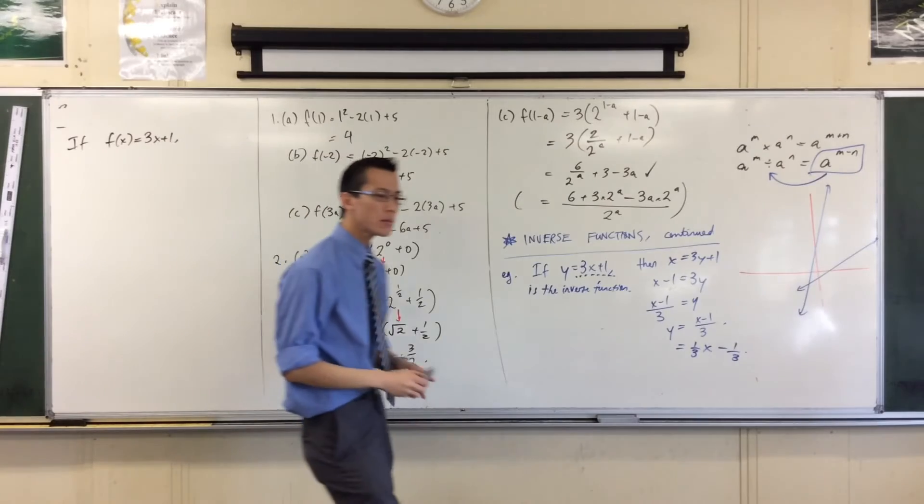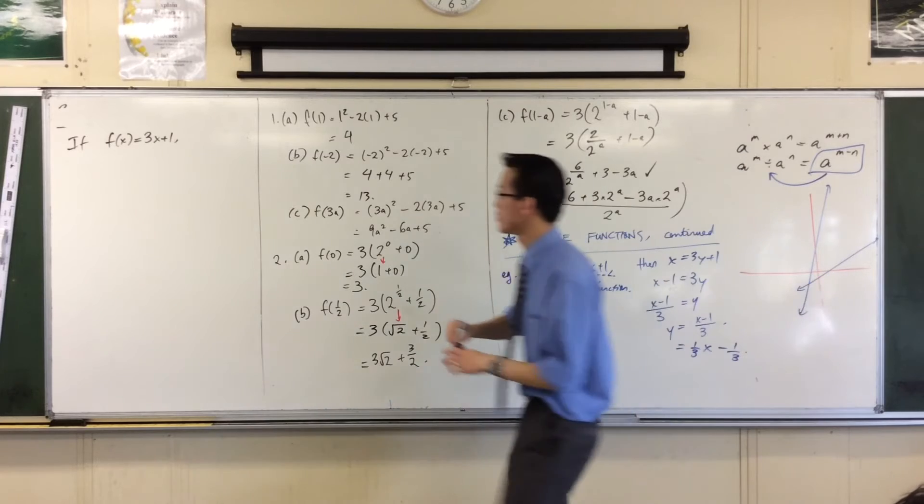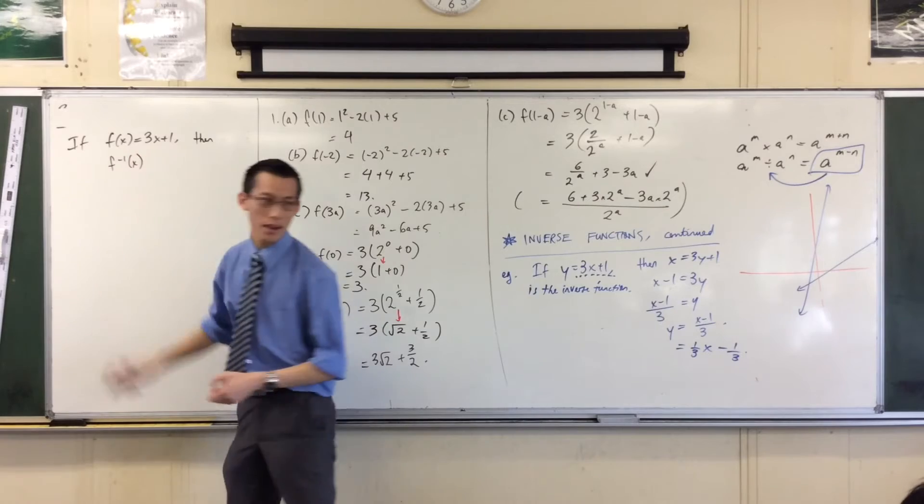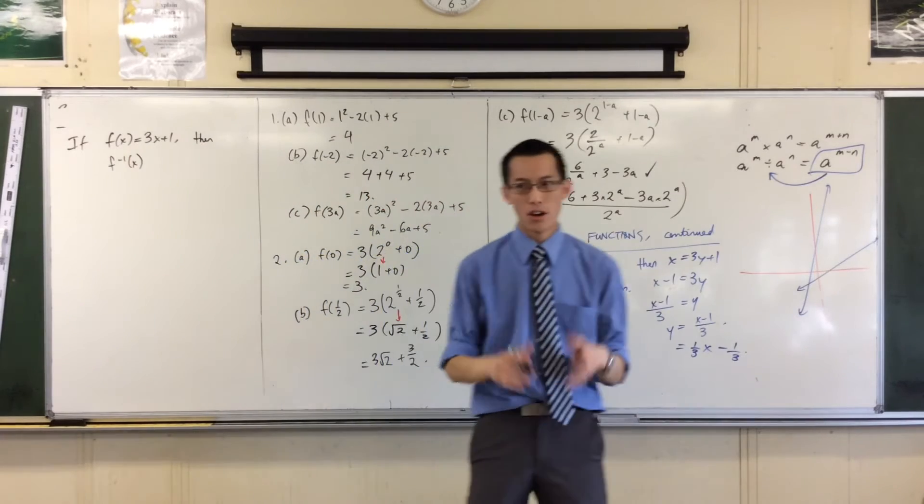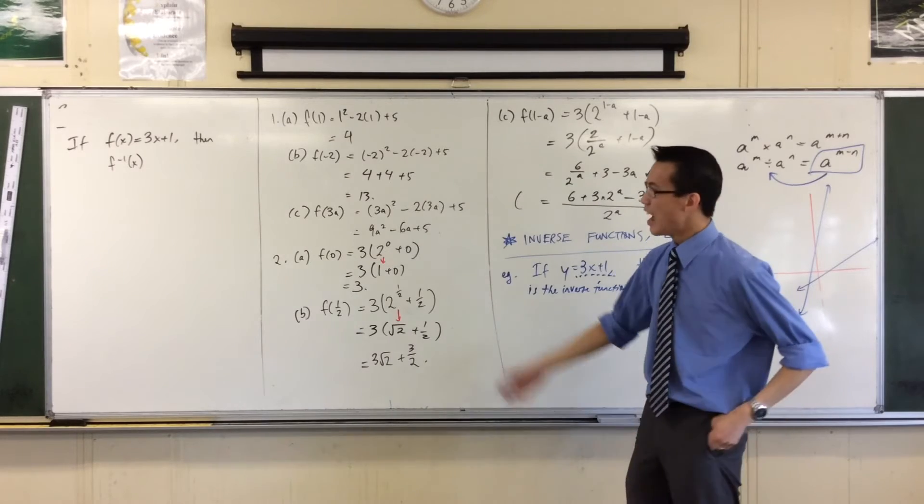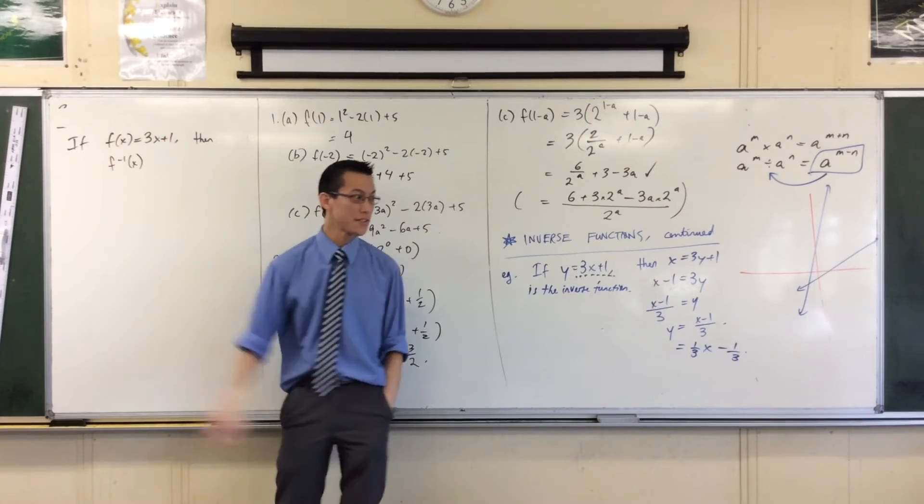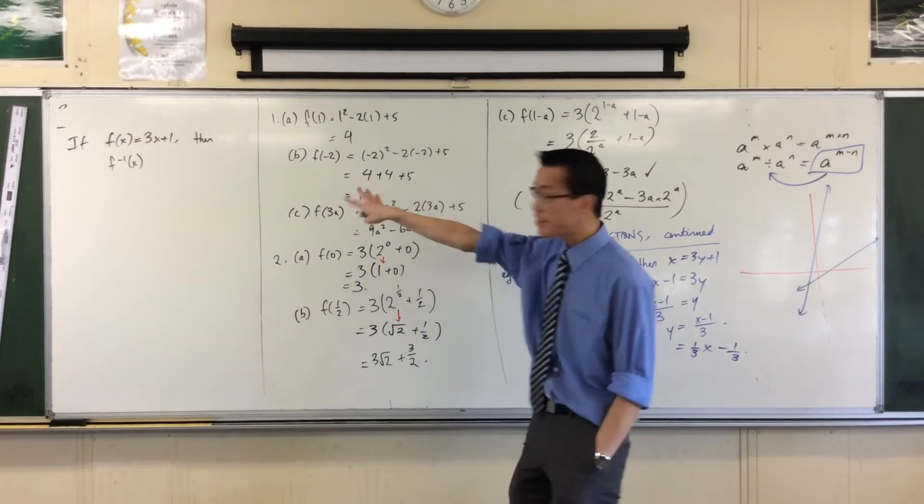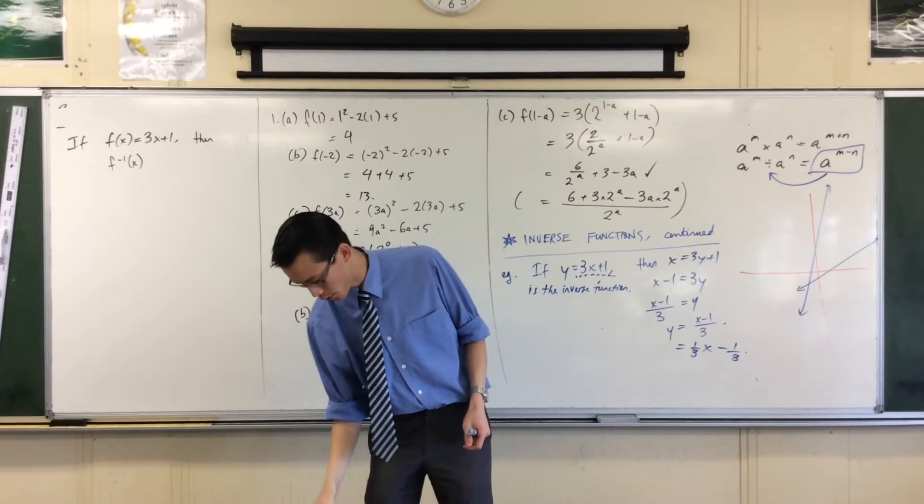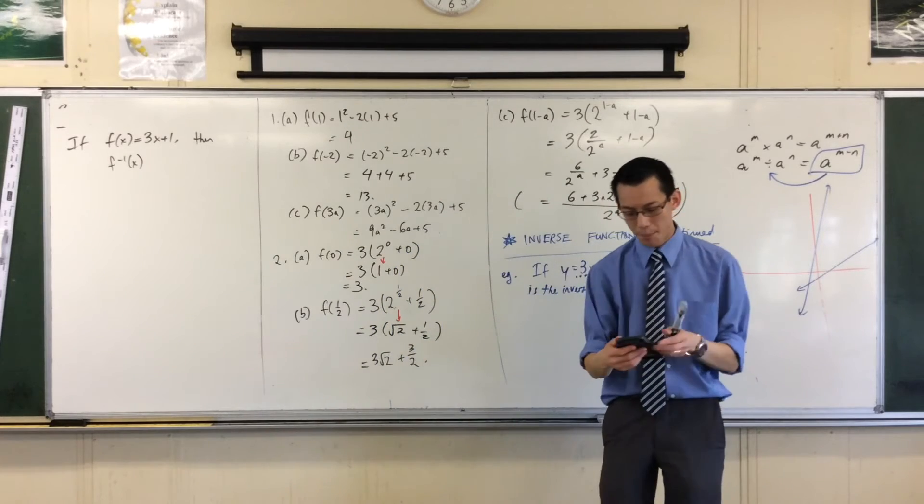If I call it f of x is 3x plus 1, then what I'm going to do is I'm going to name the inverse of f as f with a negative 1 up there. Now, please mark this, and admittedly, it's a bit confusing to start with. This is not f to the power of minus 1, even though that's exactly how I've written it. What I read that as is as f inverse, in exactly the same way that on your calculator, if you've got it there...